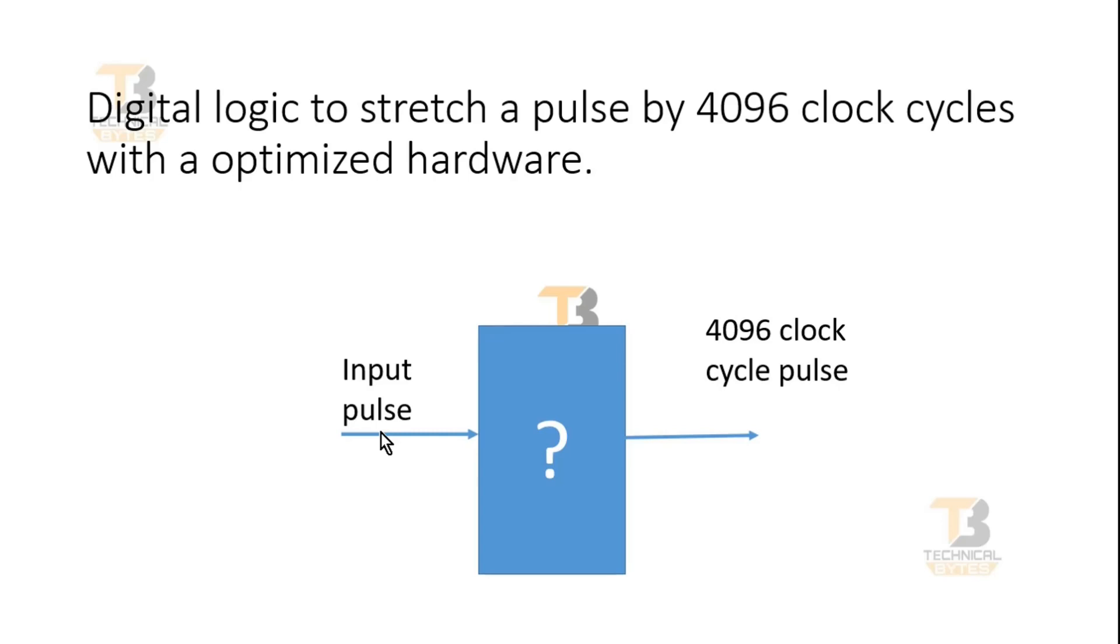But the requirement here is my hardware use should be optimized. Here you have to design this unknown block where the input pulse is of single clock cycle with output pulse is 4096 clock cycles.